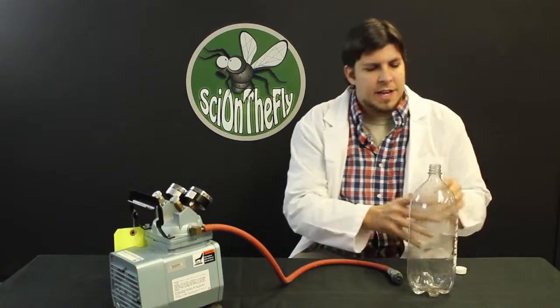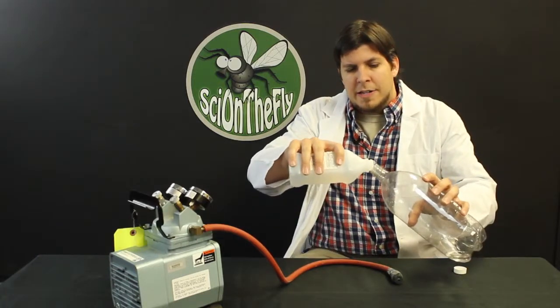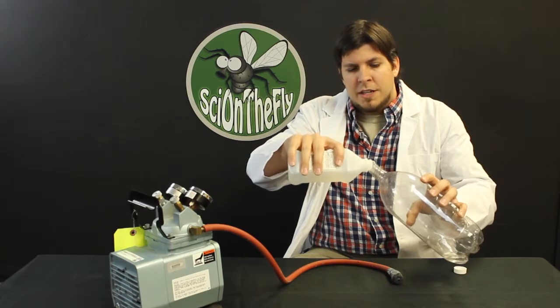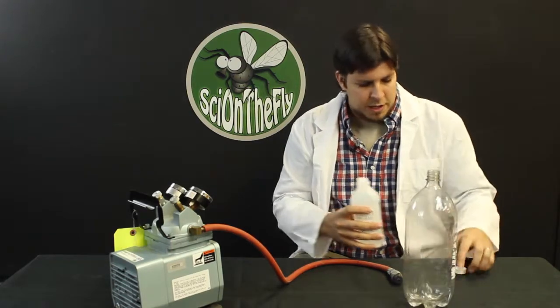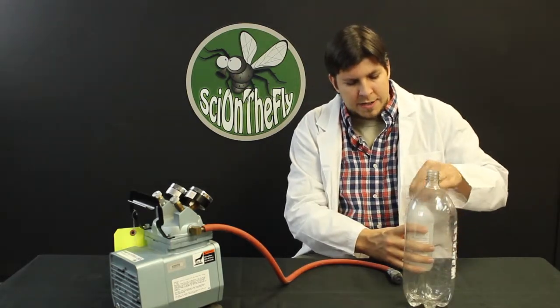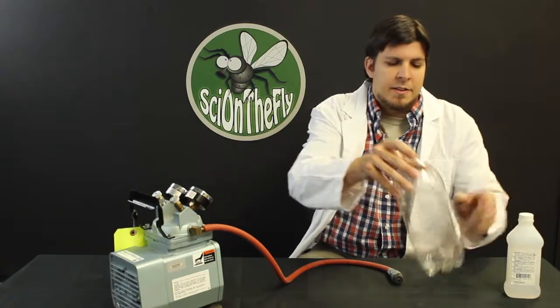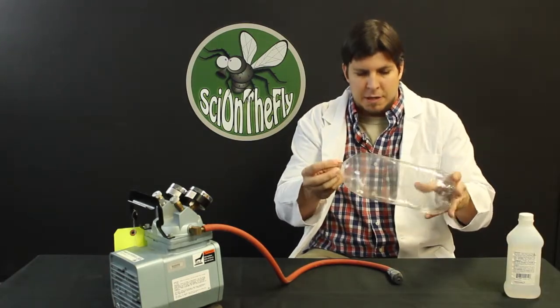What I like to do beforehand is I like to put a little bit of isopropyl into the empty two-liter. And what I'm going to do with that is I'm going to spin it around a little bit and I'm going to coat the inside of my two-liter.